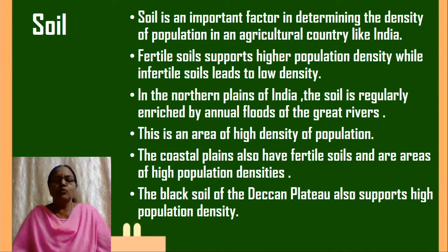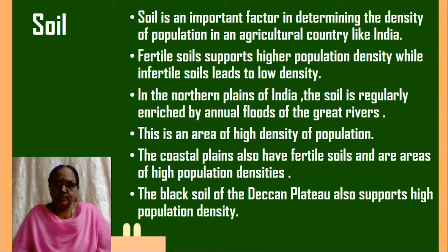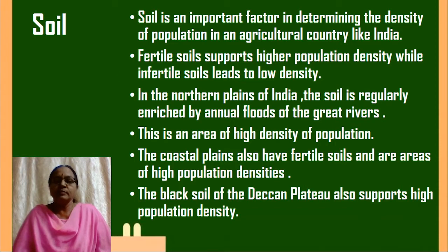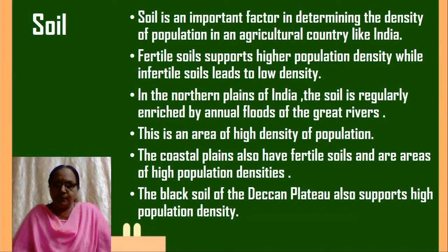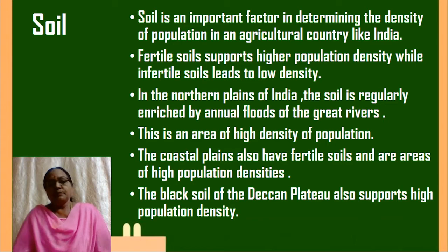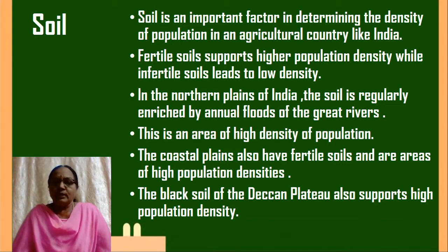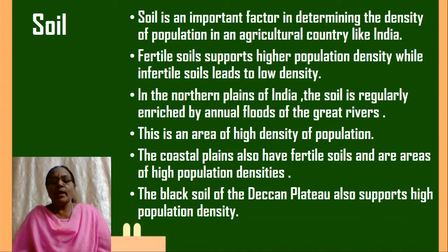Now let's move to the next factor which affects distribution of population — that is soil. Soil is a very important factor which determines the density of population, especially since India is an agricultural country and about 43% of India's population is dependent upon agriculture and allied activities. Wherever the soil is fertile we find there is a higher density of population, and regions where the soil is infertile have low density.